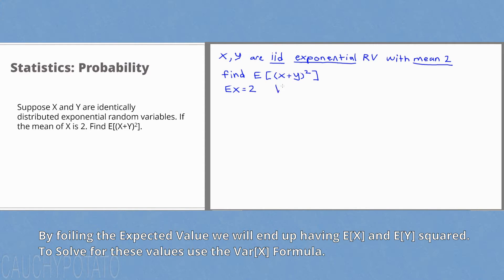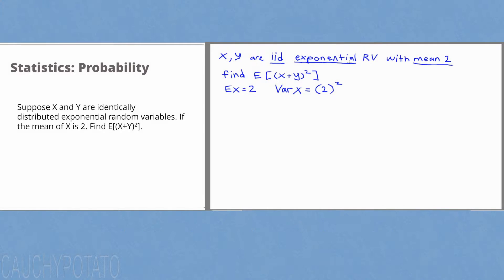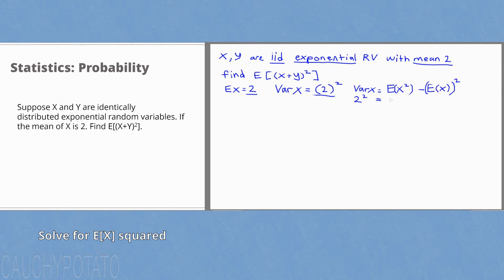Since x and y are exponential, the variance of x is the expected value of x squared. We can use the fact that the variance of x is 4 to find the expected value of x squared. Use the variance formula: variance of x equals expected value of x squared minus expected value of x, all squared. Plugging in the values, solving for the expected value of x squared, we get 8.